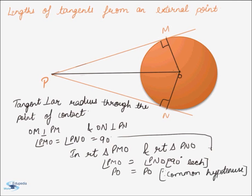Similarly, OM and ON are radii of same circle. Therefore, they will be equal.